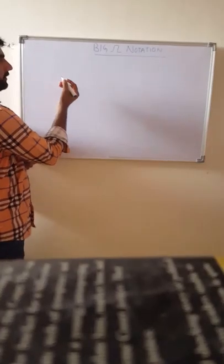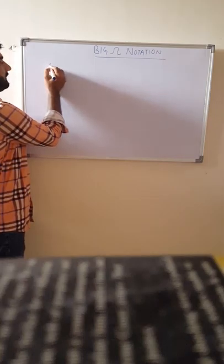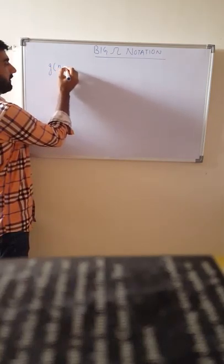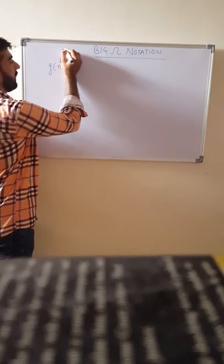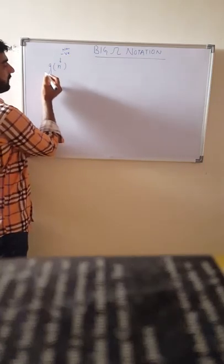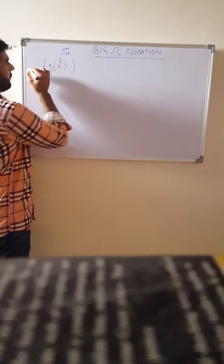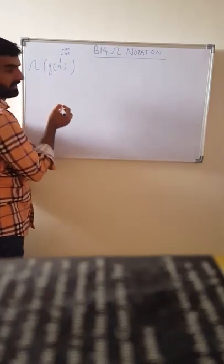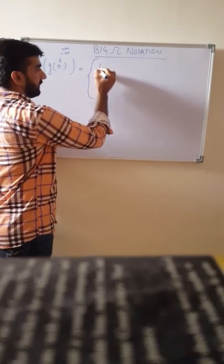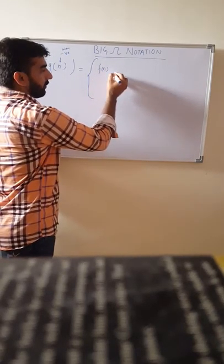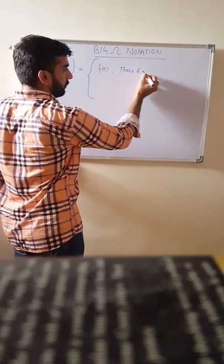Big Omega notation states: let us assume there is a function G(n), which is a non-negative function that takes a non-negative input n. If we have to find the Big Omega of G(n), then it is the set of all functions F(n) for which there exist two constants